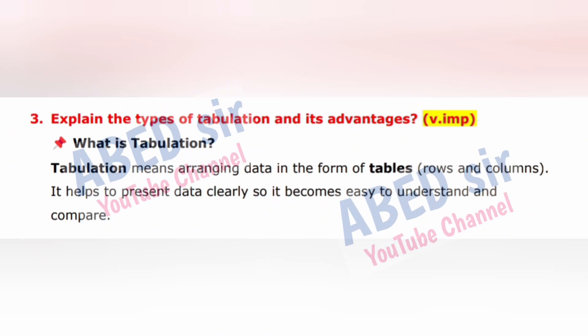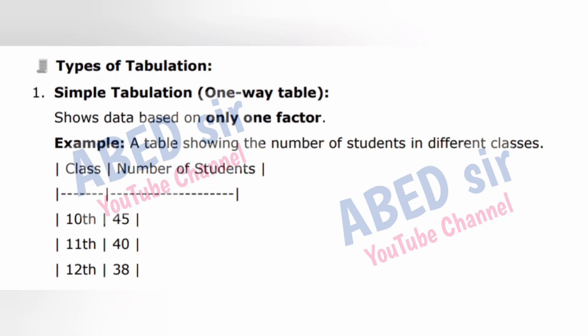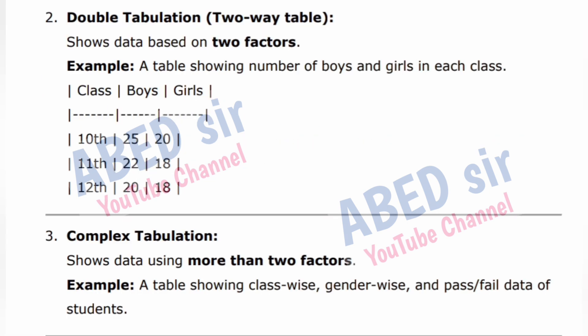Next important long question: Explain the types of tabulation and its advantages. Tabulation means arranging data in the form of tables, rows, and columns. It helps to present data clearly so it becomes easy to understand and compare. Types of tabulation: 1. Simple tabulation (one-way table) — shows data based on only one factor. Example: A table showing the number of students in different classes. 2. Double tabulation (two-way table) — shows data based on two factors. Example: A table showing number of boys and girls in each class. 3. Complex tabulation — shows data using more than two factors. Example: A table showing class-wise, gender-wise, and pass-fail data of students.